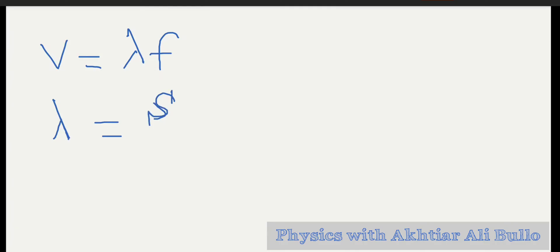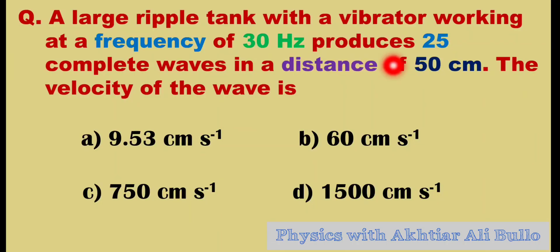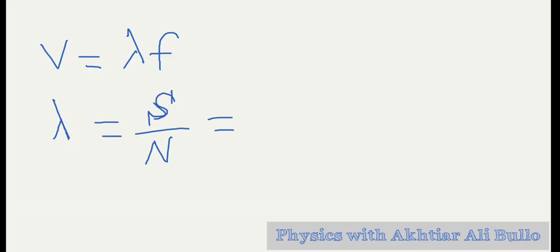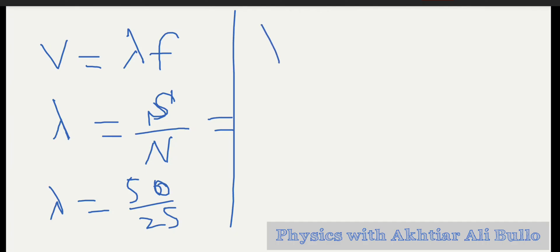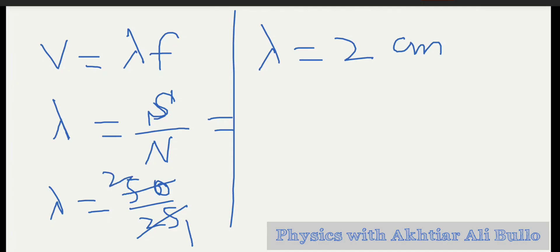The distance is 50 centimeters and the number of waves is 25, so lambda = 50 divided by 25. Lambda is obtained as 2 centimeters, because 25 goes into 50 exactly 2 times. Now we will calculate wave velocity using v = λf.